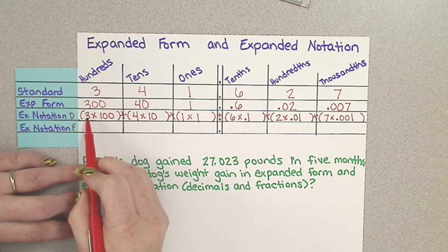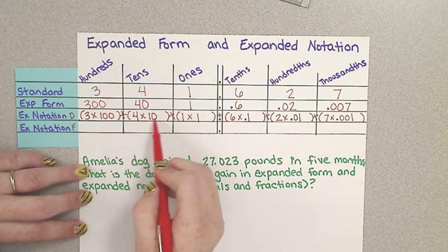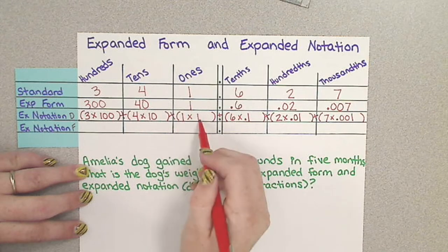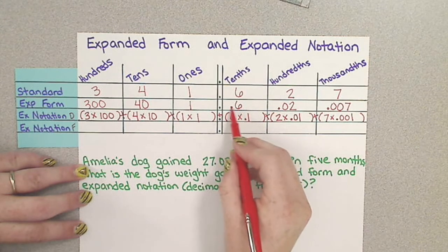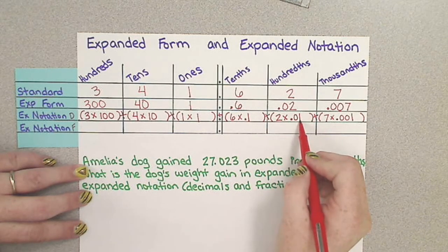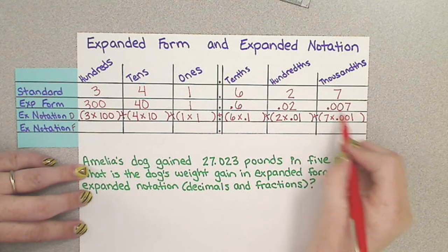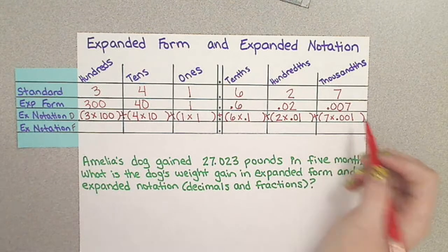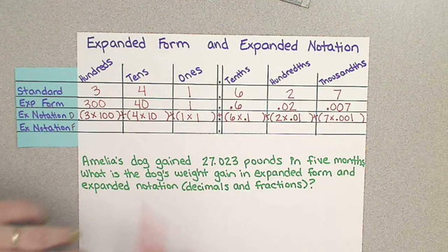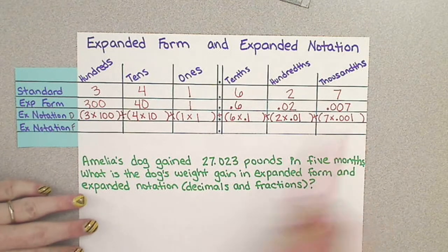If you multiplied 3 times 100, you would get 300. 4 times 10 is 40. 1 times 1 is 1. 6 times 1 tenth is .6 tenths. 2 times 1 hundredth is 2 hundredths. 7 times 1 thousandth is 7 thousandths. So now we have expanded notation with decimals.